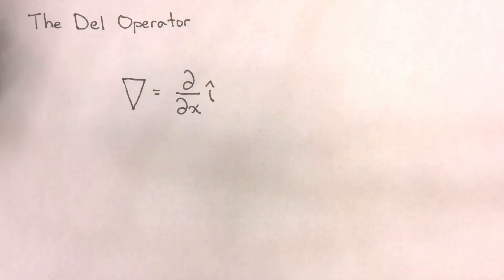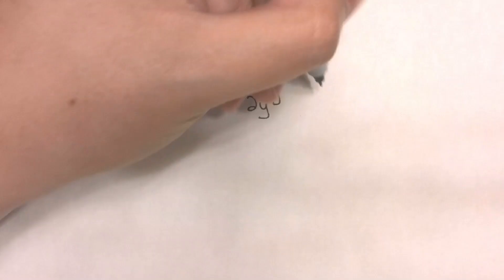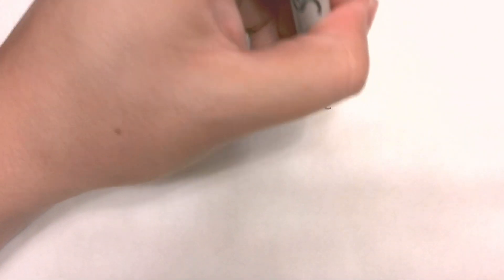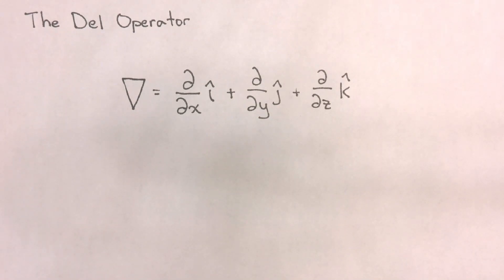Mathematically, we can define the gradient operator — also known as the del operator, also known as nabla — as: del equals a partial change with respect to x times a unit vector in the x direction, a partial change with respect to y times a unit vector in the y direction, and a partial change with respect to z times a unit vector in the z direction. Now while this looks like a vector, it is actually an operator — not a vector.